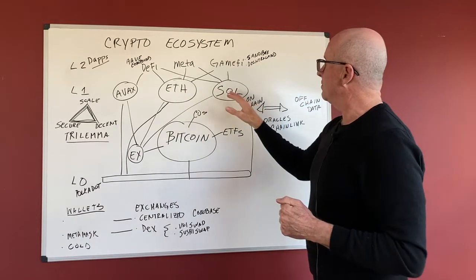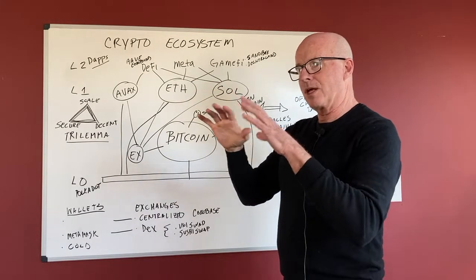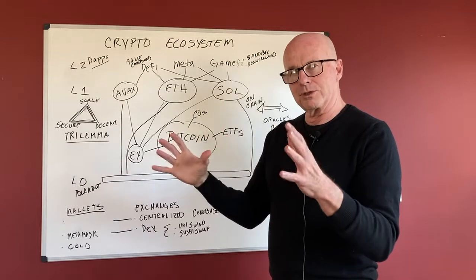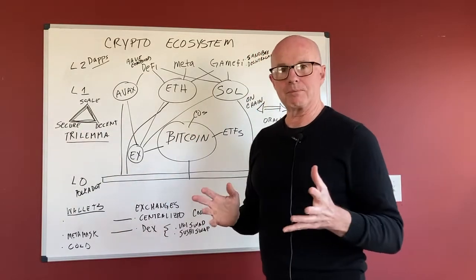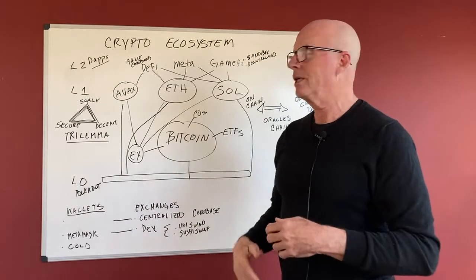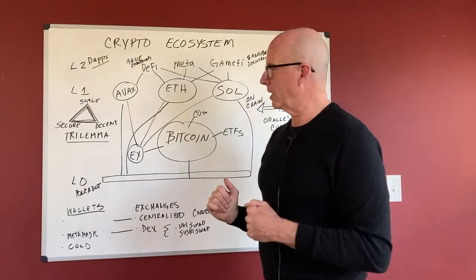And then each of these blockchains is a world unto itself. It is a walled garden. You can't get in or out of it. That's part of the security piece. You can't get into it. It's tamper proof. The blockchains.